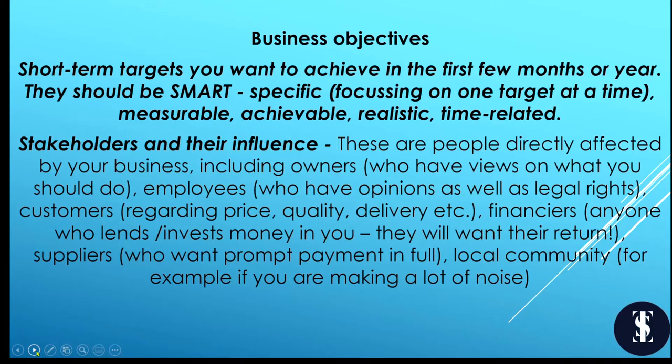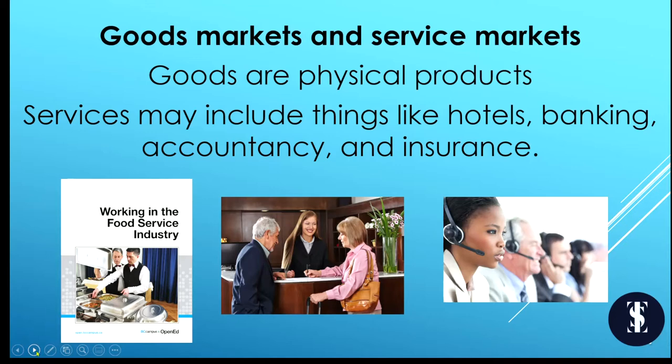Stakeholders and their influence — these are people directly affected by your business. Think about your owner, who has views on how you should do things. Employees have opinions and legal rights. Customers have views regarding price, quality, delivery, etc. Financiers — anyone who lends to you or invests in you will want their return. Suppliers want prompt payment in full. Goods are physical products; services could include hotels, banking, accountancy or insurance.